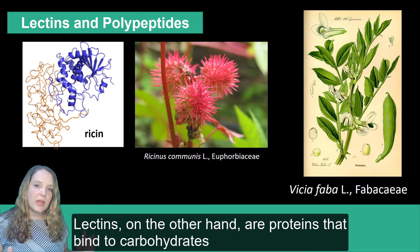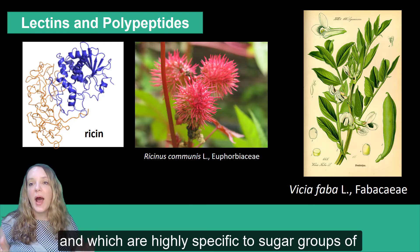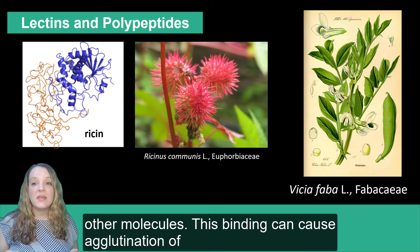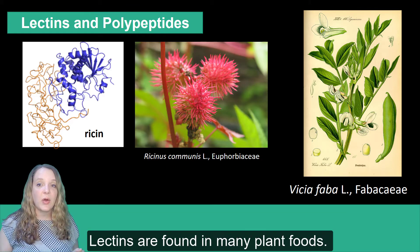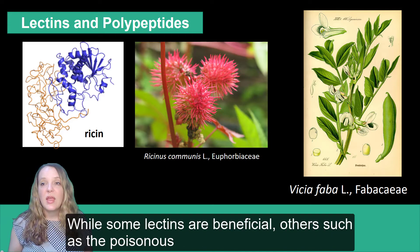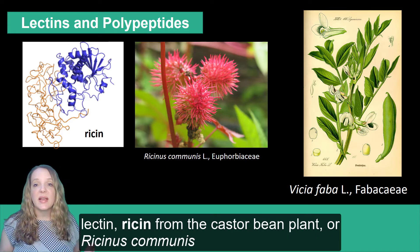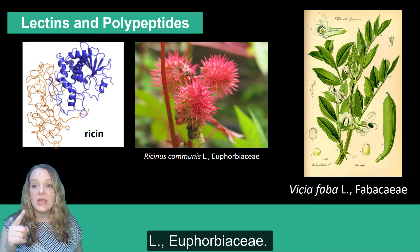Lectins, on the other hand, are proteins that bind to carbohydrates and which are highly specific to sugar groups of other molecules. This binding can cause agglutination of cells or precipitation of glycoconjugates and polysaccharides. Lectins are found in many plant foods, and while some lectins are beneficial, others, such as the poisonous lectin ricin from the castor bean plant or Ricinus communis shown here in the Euphorbiaceae family, are harmful.